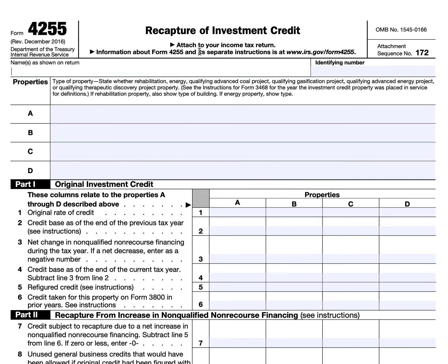I think we can get started on this one-page tax form. You have to put the name as shown on the tax return and then the identifying number. We're going to use Acme Enterprises and Acme Energy Project. You should state whether it's a Rehabilitation, Energy, Qualifying Advanced Coal Project, Qualifying Advanced Energy Project, and so on. You may need to see the instructions for the investment credit IRS Form 3468 for the year that the property was placed into service if you need to coordinate the definitions.